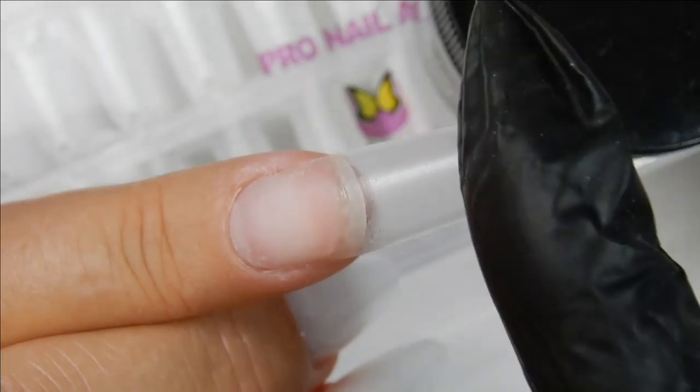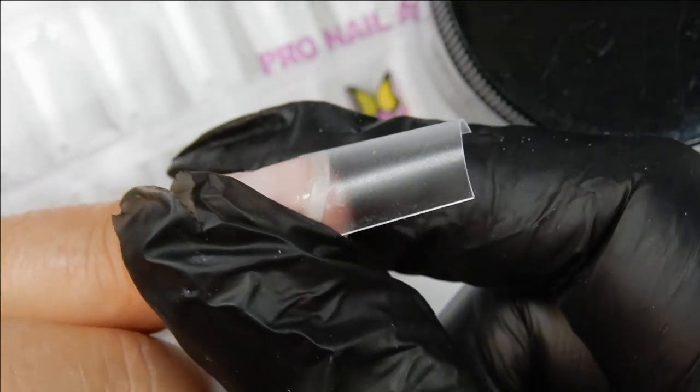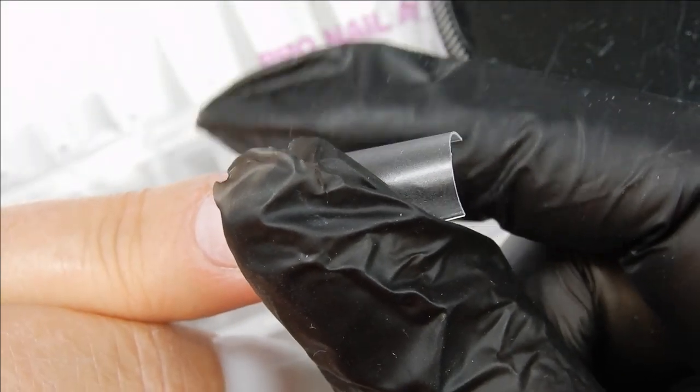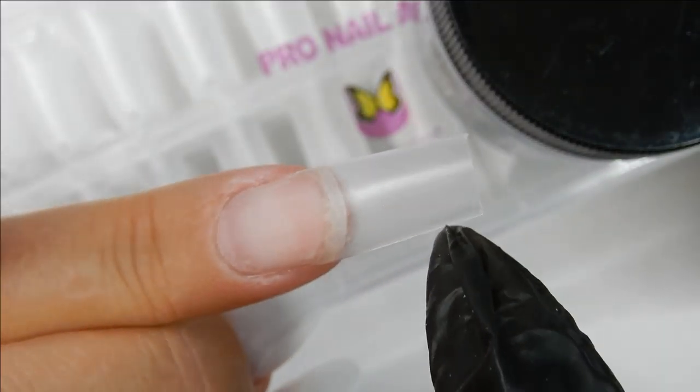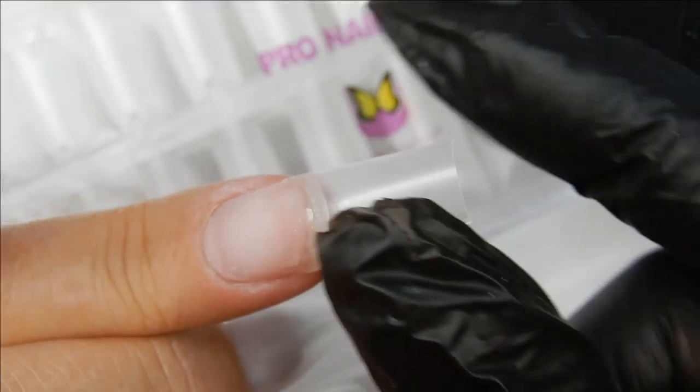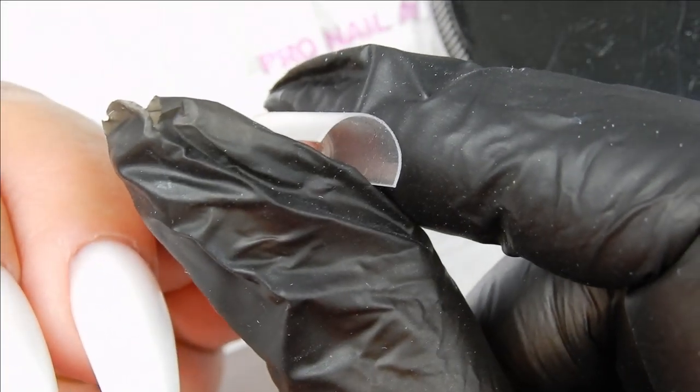Looking at this tip, it is a square tip, but it can be cut into a tapered square and you can even shape it into an almond, pretty much whatever you want. And as you can see, the tip is very thin and very flexible, and there is a C-curve to it if you take a look at it here.